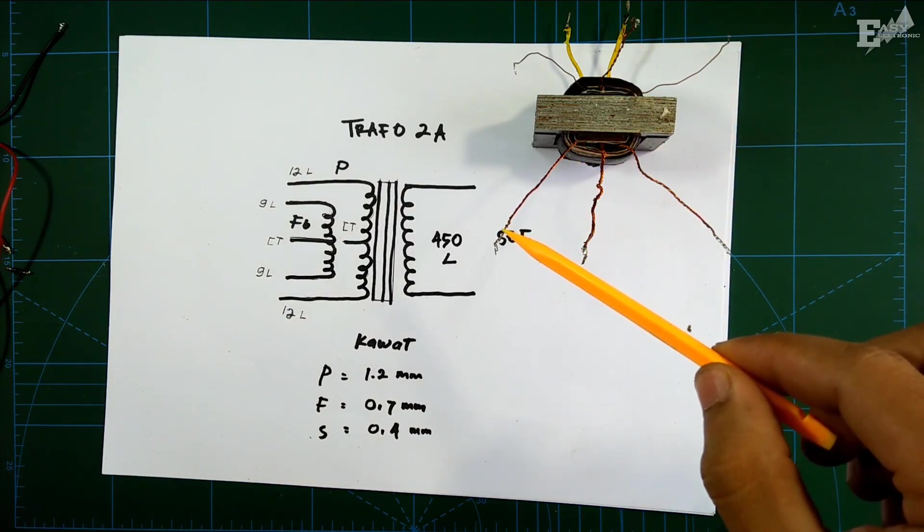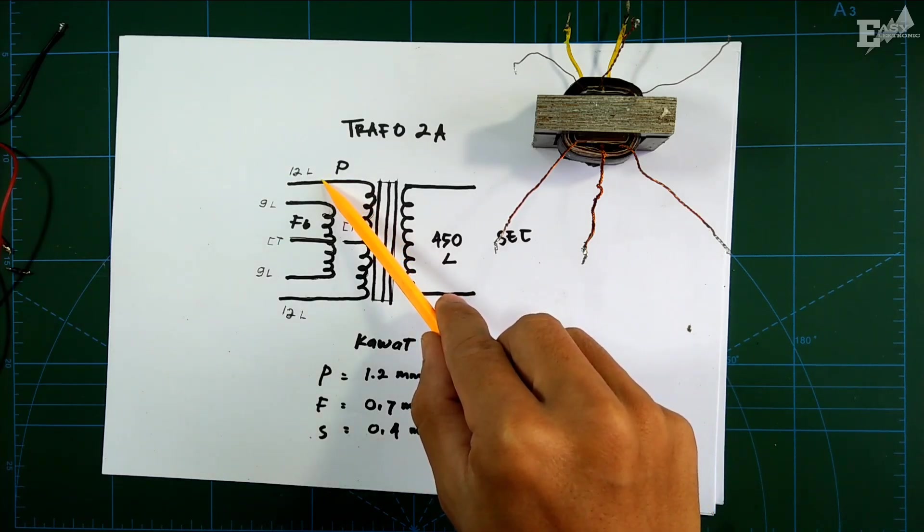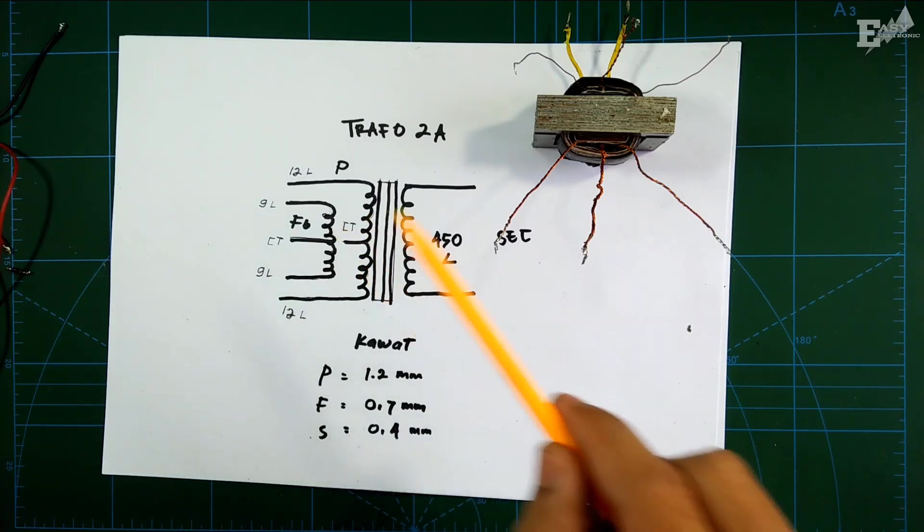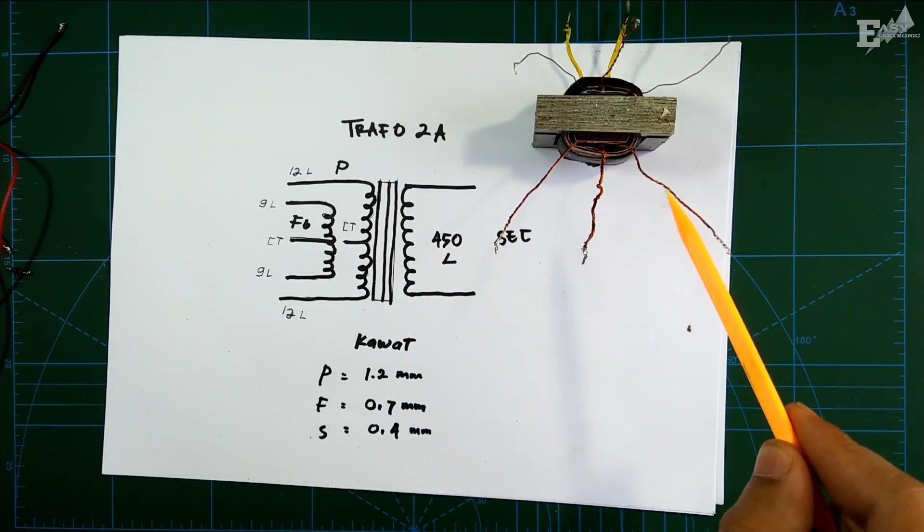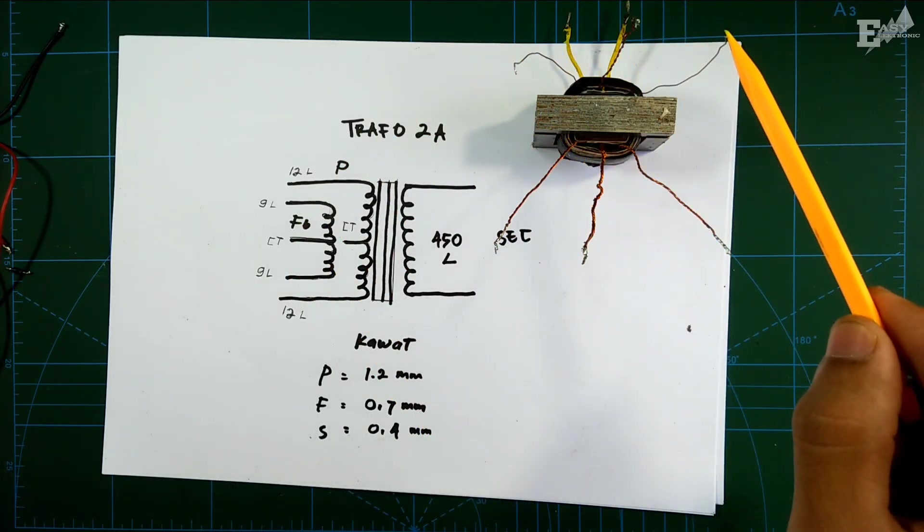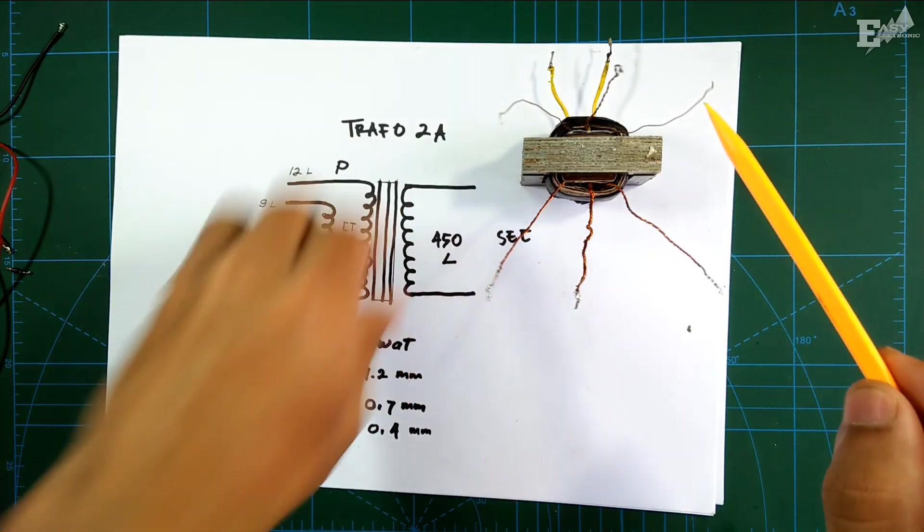This is the primary winding, 12 turns, and this is for the CT. Then this is the primer, end of primer, 12 turns. CT is 12, and this is for feedback.